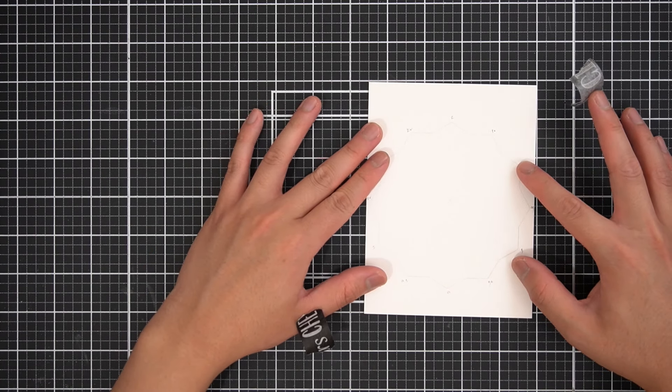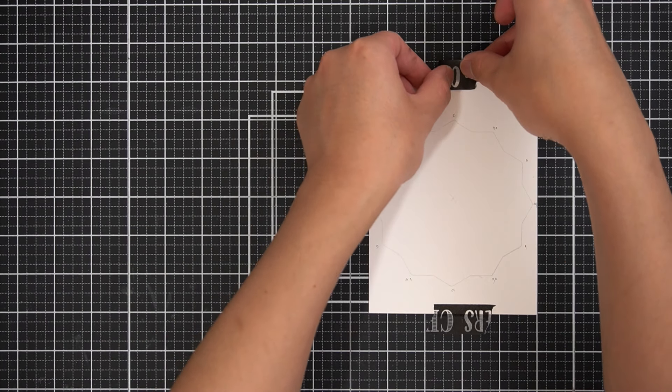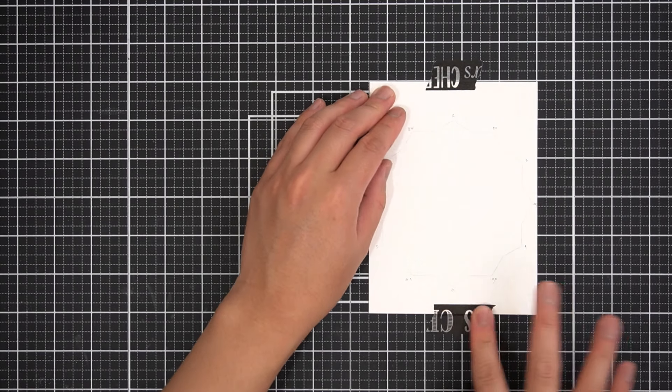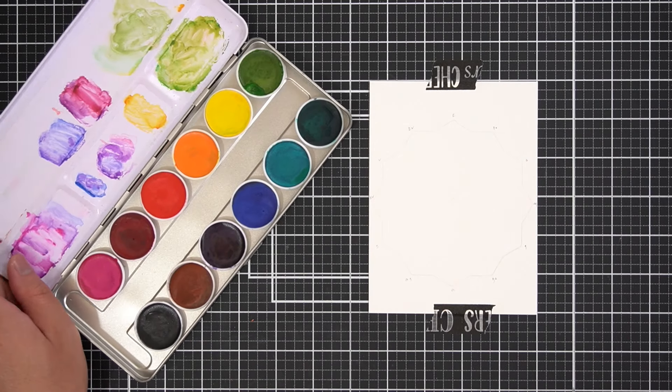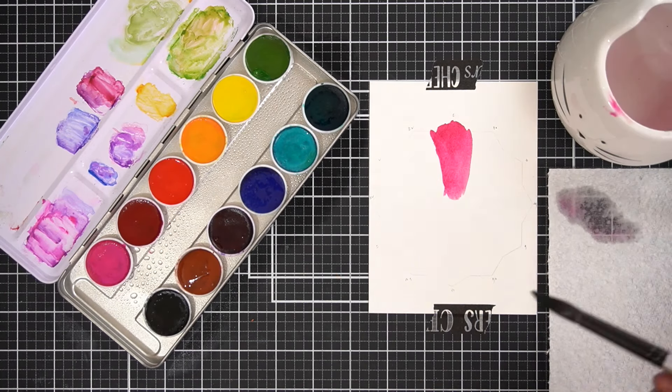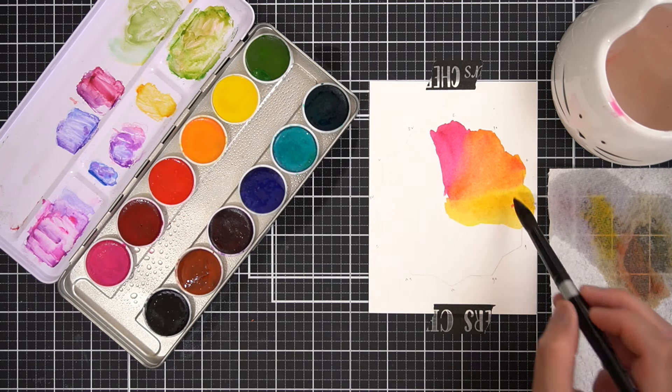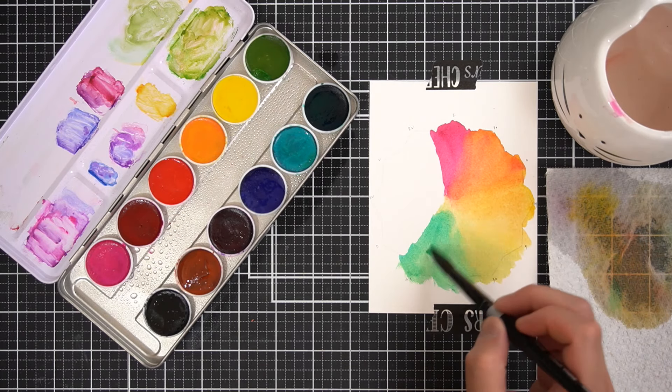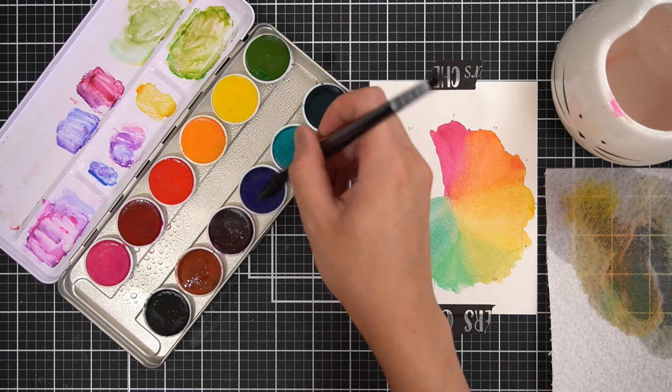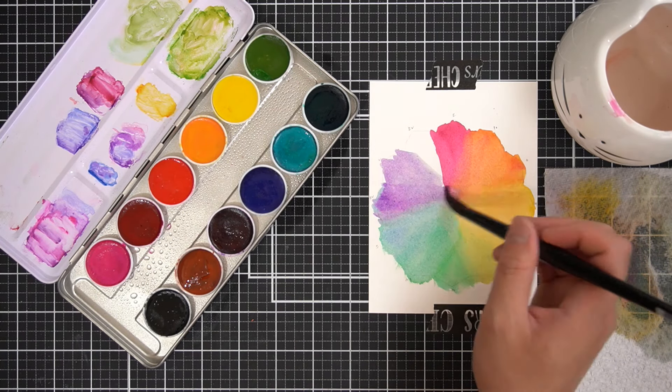After taping my labeled watercolor panel to my craft mat, I'll pull out my well-loved Altenew watercolor essentials 12 pan set. This pan is coordinated beautifully so that when mixing secondary and tertiary colors, you'll get bold and vibrant colors. So I'm just going around my color wheel here, trying my best to blend the colors, but I'm not going to work too hard in that department. I'm really more concerned about the saturation of color.